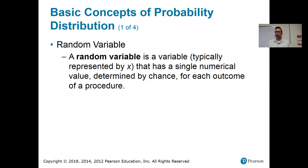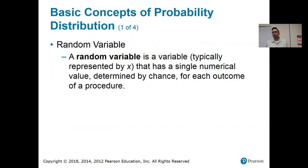A random variable is a variable — typically represented by X, although sometimes Y or some other letter — that has a single numerical value determined by chance for each outcome of a procedure. The example we're going to be talking about: we're going to flip a coin two times, and X is going to stand for the number of times that heads comes up. That's a good example of a random variable.